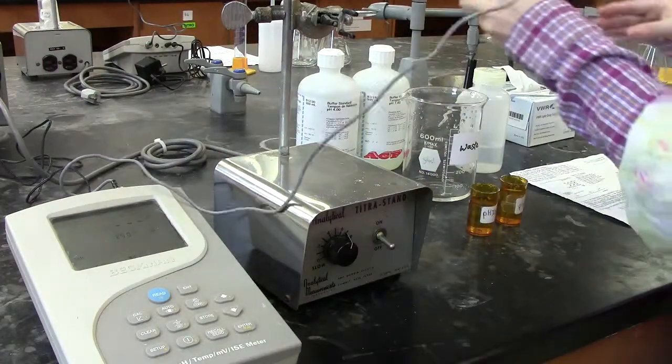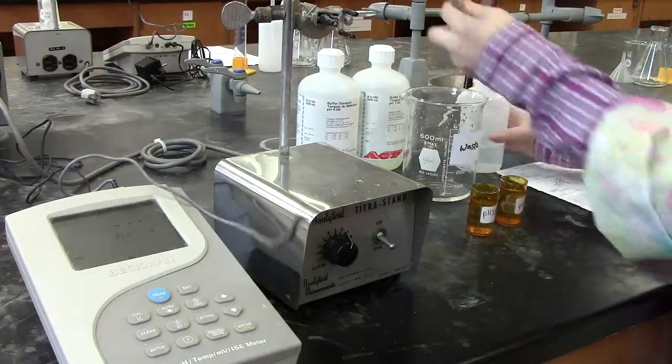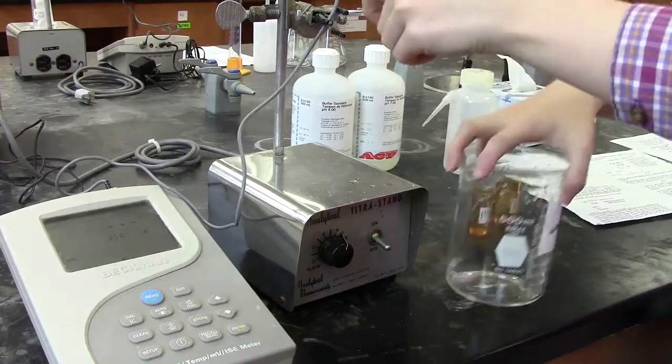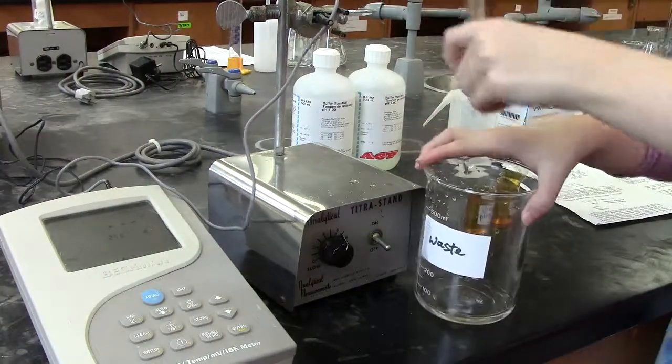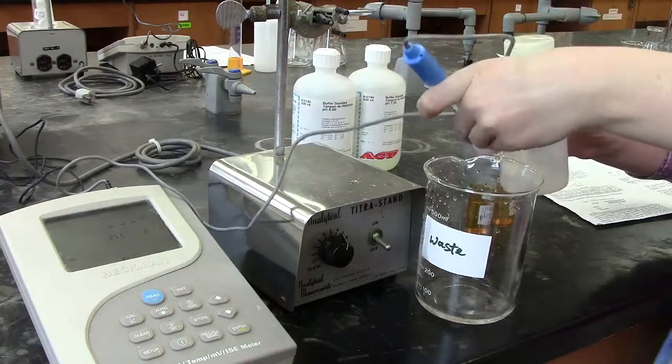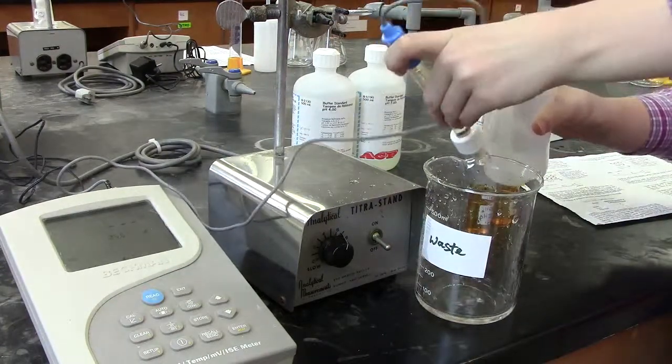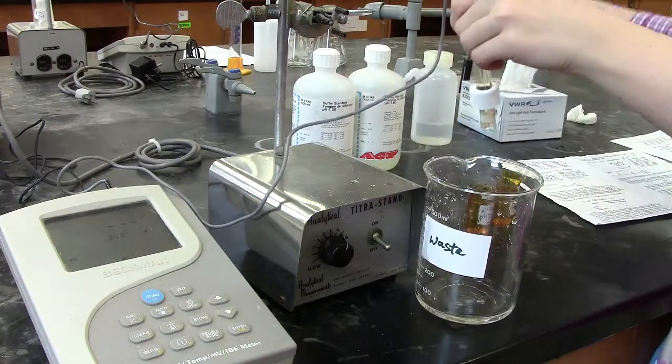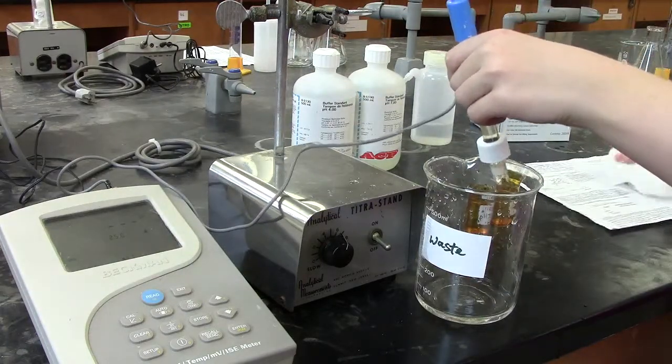When the electrode is being transferred to a different solution, it always needs to be washed. This can be done by rinsing the electrode into waste using distilled water. Once rinsed, the electrode needs to be blotted dry gently using a tissue.